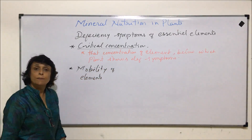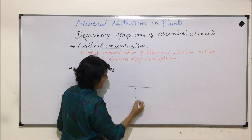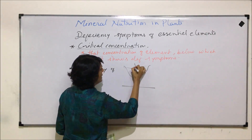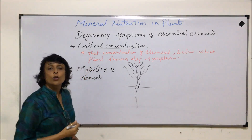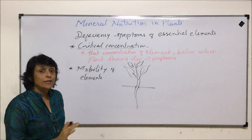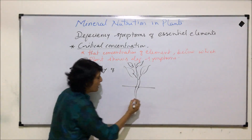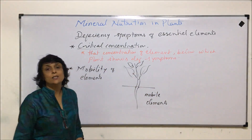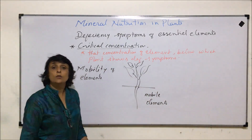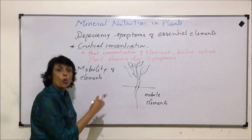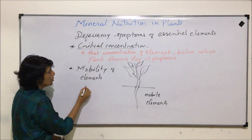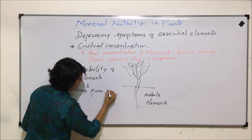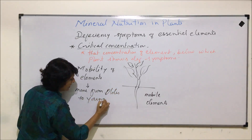Let us take two examples to understand this. Consider a plant growing in deficient soil. The upper leaves are younger leaves and the lower leaves are older leaves. We are talking about mobile elements — those which can move from older tissue to younger tissue.